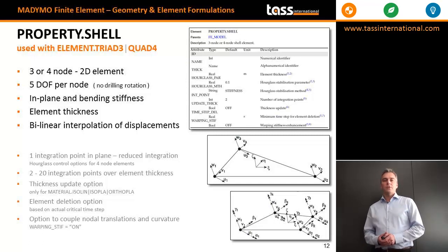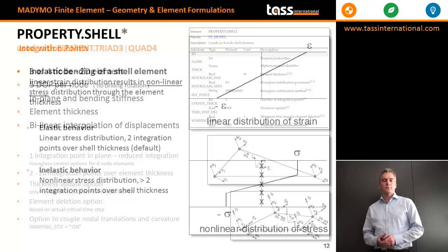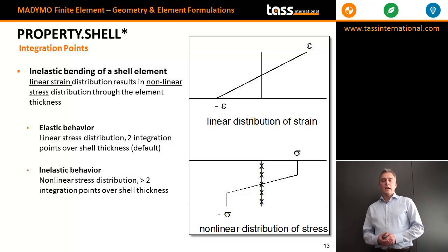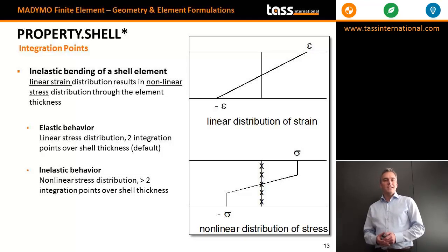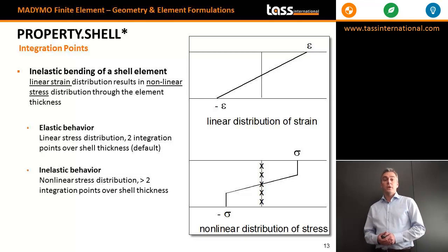The shell element is also a 2D element and can be used with element triad3 or quad4. The key difference between the shell element and the membrane element is that a shell element can handle bending stiffness, whereas the membrane element can only handle in-plane stiffness. With property shell, you have integration points over the thickness of the element, with an option to define inelastic bending — meaning plastic deformation. If you want to model plastic deformation, you need more than 2 integration points over the element thickness. A linear distribution of strain uses 2 integration points, while inelastic behavior requires more points to capture the non-linear stress distribution.